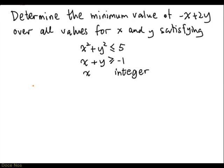We are going to look at the following problem. Determine the minimum value of minus x plus 2y over all values for x and y satisfying the following constraints: x squared plus y squared less than or equal to 5, x plus y greater than or equal to minus 1, and x has to be an integer.